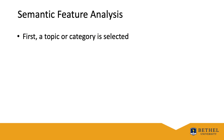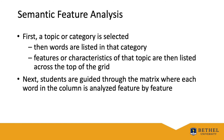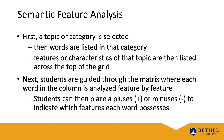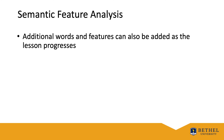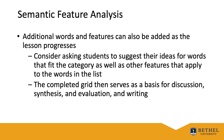The semantic feature analysis is an incredibly effective organizational and visual strategy for students to organize their understanding of how words and concepts are related and interrelated. First, a topic or category is selected. Then words are listed in that category. Features or characteristics are then listed across the top of the grid, which allows them to use that as an organizer on the oppositional axis. Next, students are guided through the matrix, where each word in the column is analyzed feature by feature. Students can place a plus or minus, a question mark, a yes or no, or a true or false for each term and its feature accordingly. Additional words and features can also be added as the lesson progresses. You might consider asking students to suggest words that fit the category, as well as other features that apply to the words on the list. The completed grid then serves as a fantastic basis for discussion, synthesis, evaluation, and writing.